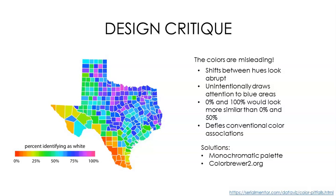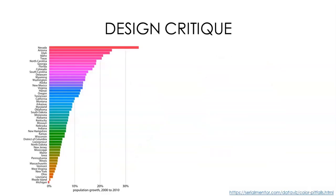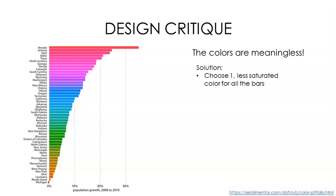We could fix some of these issues by choosing a monochromatic palette. ColorBrewer2.org is a tool you can use to choose color schemes for cartography or map visualizations. Here's another example: the colors don't add any new information to the visualization. We're only looking at two variables here — the name of the state, which is labeled, and the population growth, shown in the length of the bars. The chosen colors are also very saturated, which can be hard to look at. To avoid hurting people's eyes or implying anything unintentionally with color, it would be better to choose one less saturated color for all of the bars.